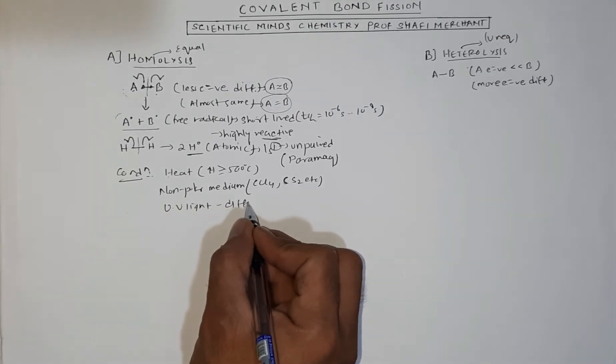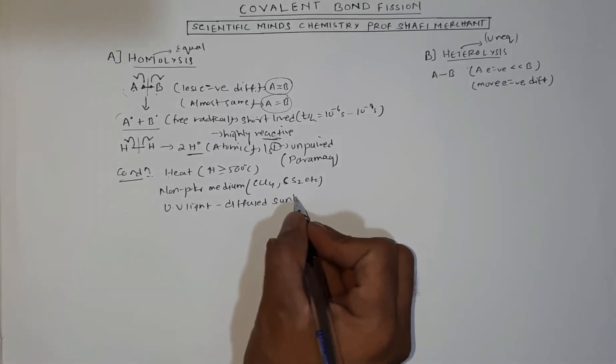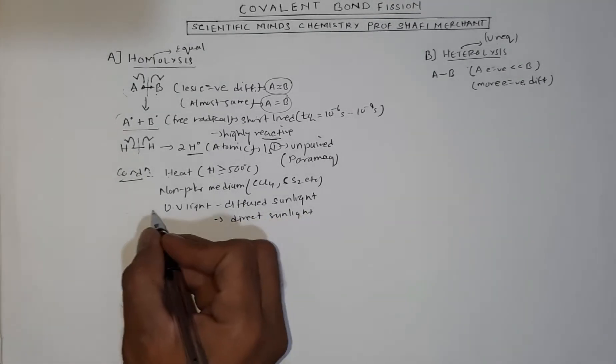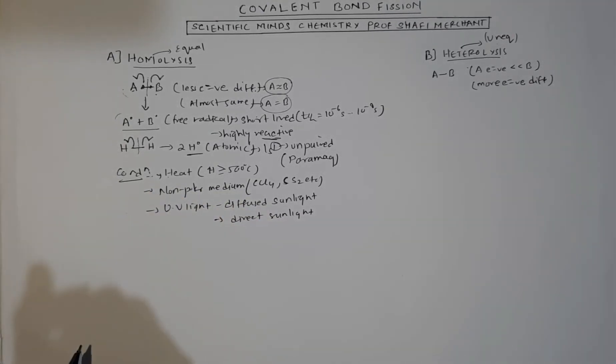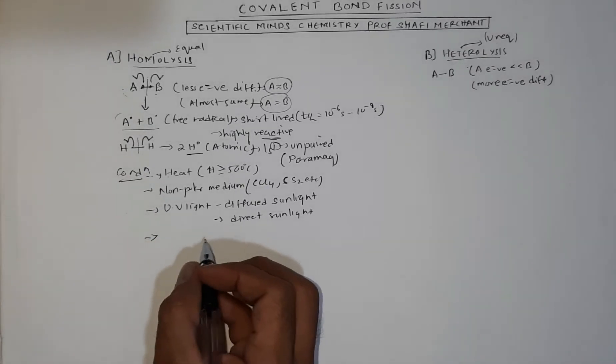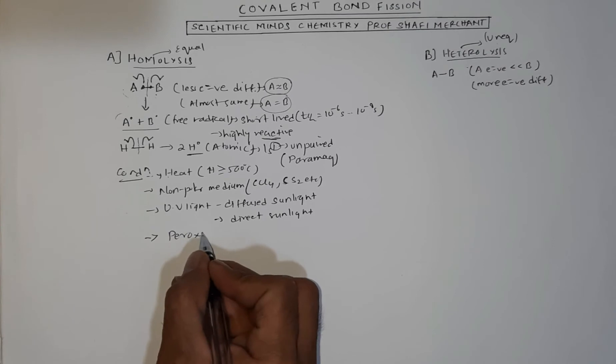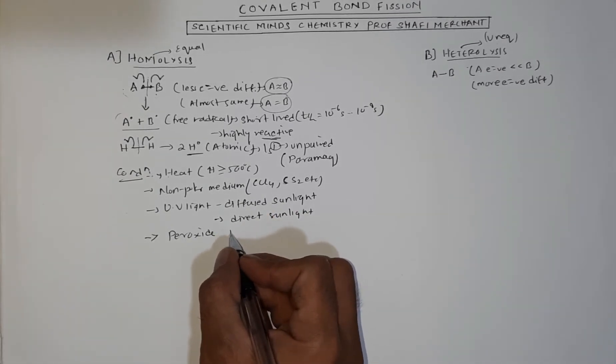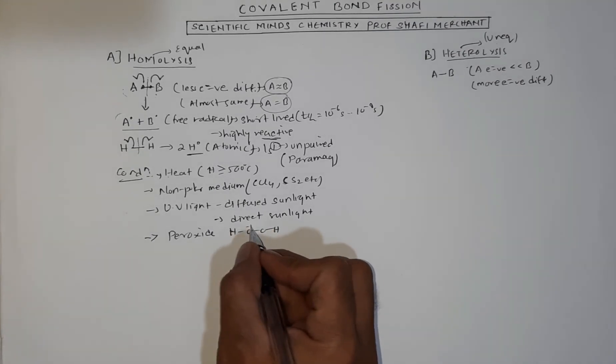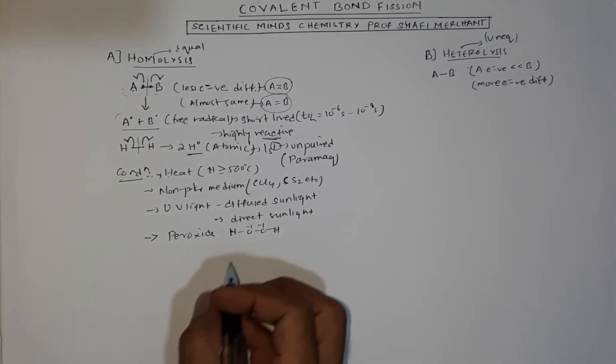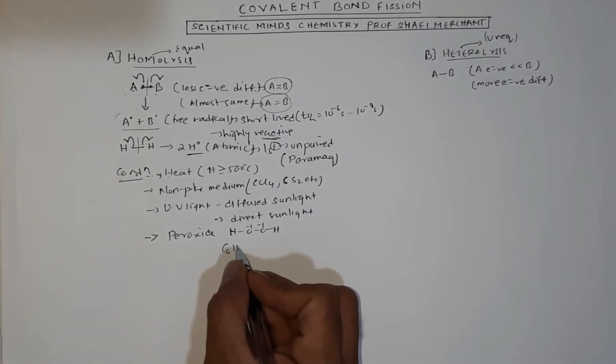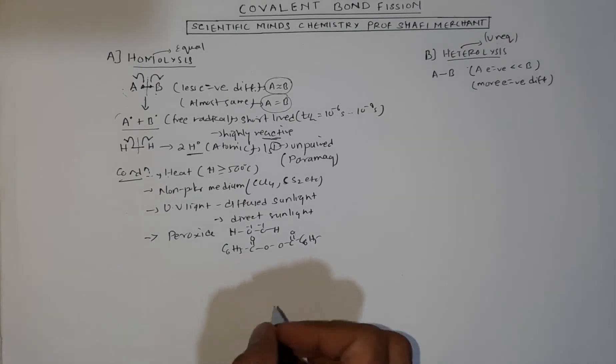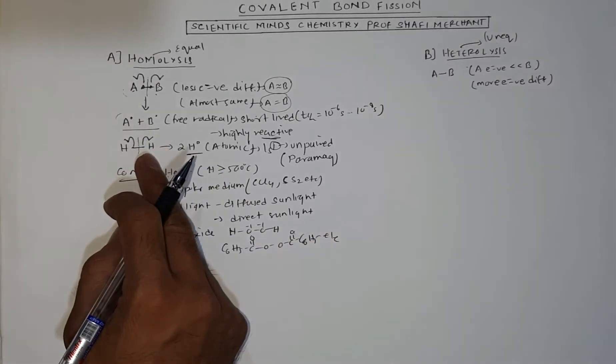Or the presence of UV light. Sometimes you'll see written diffuse sunlight or direct sunlight. Or sometimes they will write peroxide. You know peroxide has oxygen in -1 oxidation state with O-O single bond. For example, hydrogen peroxide H2O2. But the most famous peroxide used in organic chemistry is benzoyl peroxide, C6H5-CO-O-OC-C6H5.